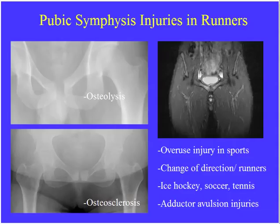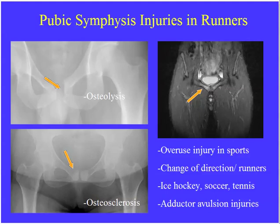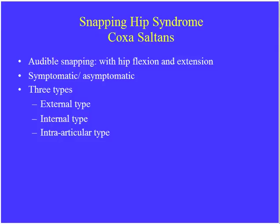Pubic symphysis injuries or osteitis pubis occur in athletes doing a lot of direction changes — ice hockey, soccer, running. On plain film, we may see osteolysis or lucency at the pubic symphysis, or increased sclerosis in older injury. On MR, high signal on T2 involves the pubic symphysis. This is a stress-related injury in runners who change direction frequently.